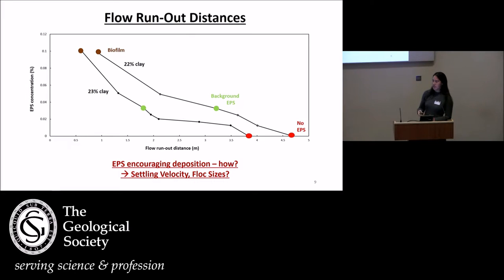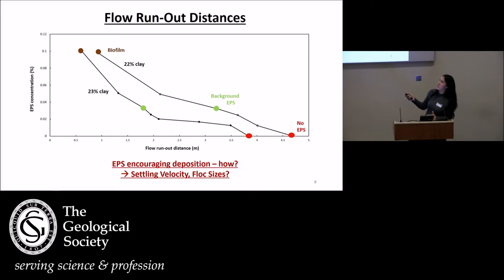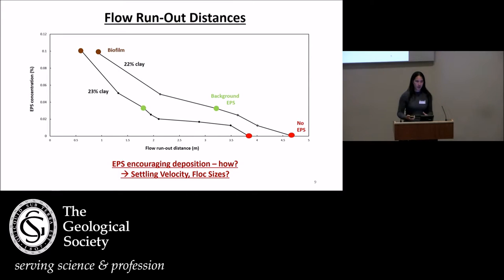Just to emphasise this effect on run-out distance: for 22% and 23% clay, from the scenario with no EPS to one with a biofilm, the run-out distance goes from 4.5 metres to about 1 metre. So EPS is promoting deposition of the clay particles in the flow.